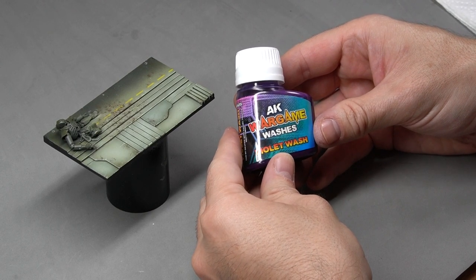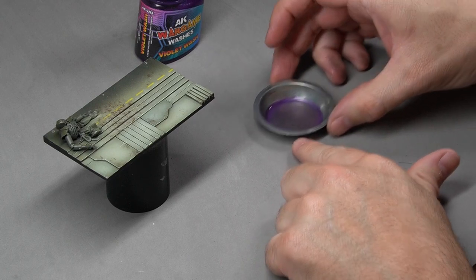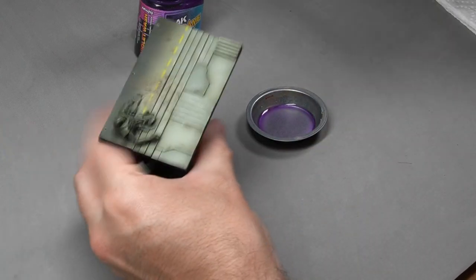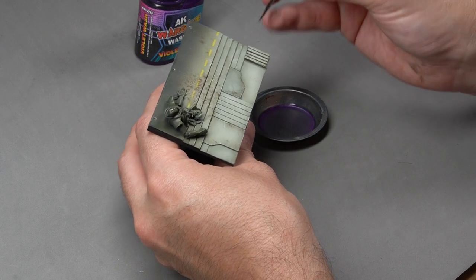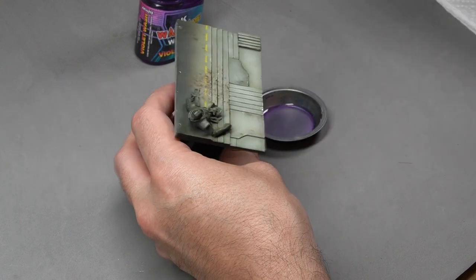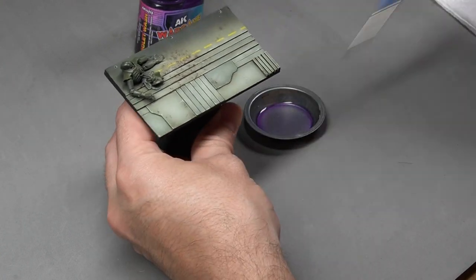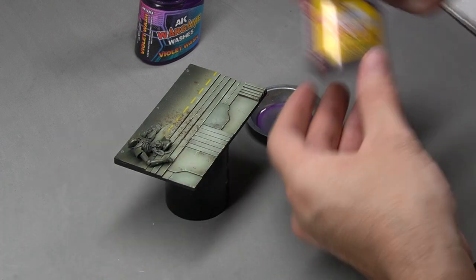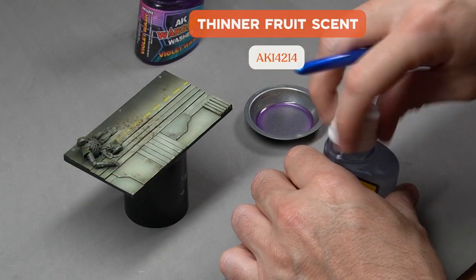With our violet wash, we'll do the same. We've shaken it, poured some onto a bit of thinner, and we're going to tint some panels. If we go outside the lines, we can use some thinner. We'll drain and remove it.